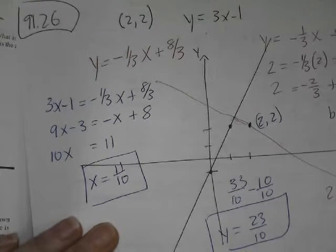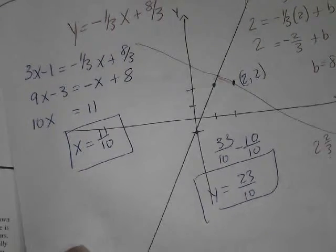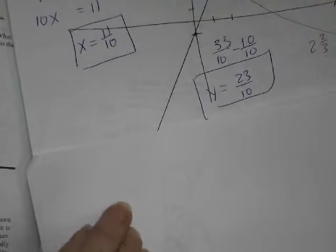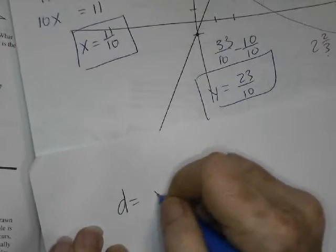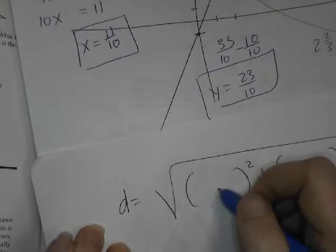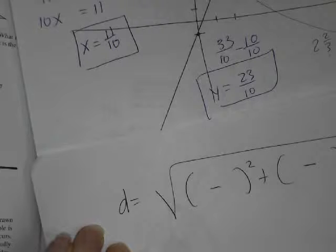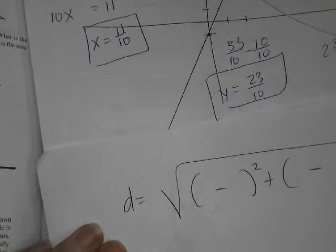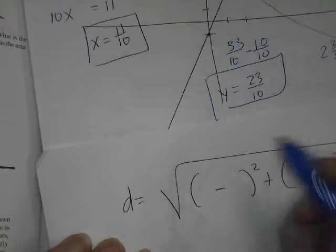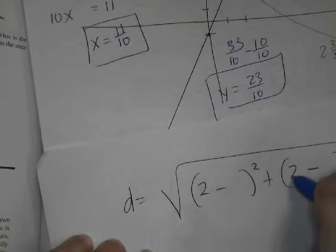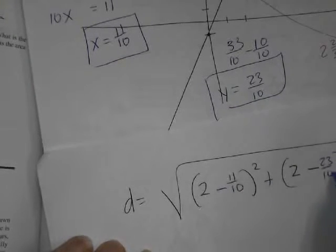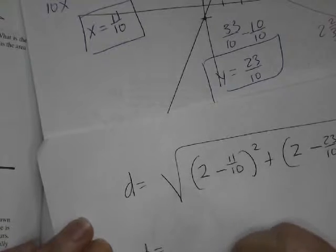I'm going to make sure everything is looking good so far. Yep, everything is looking good. So then we plug those all into the formula, into the distance formula. We've got to use the 2 comma 2. So I'm going to probably do fraction math. I think I can handle it.